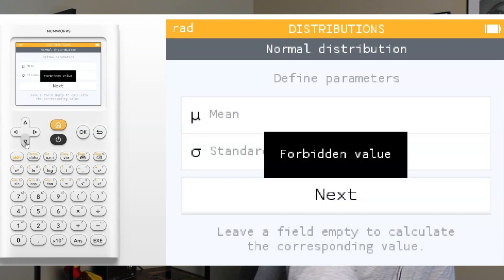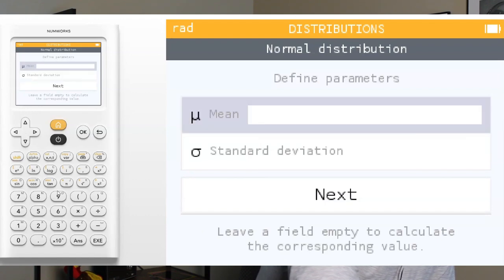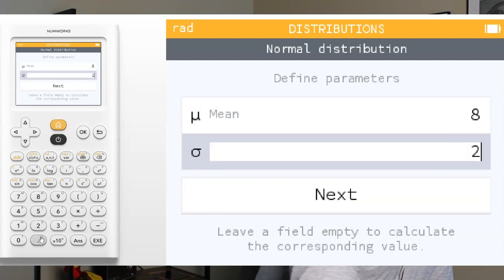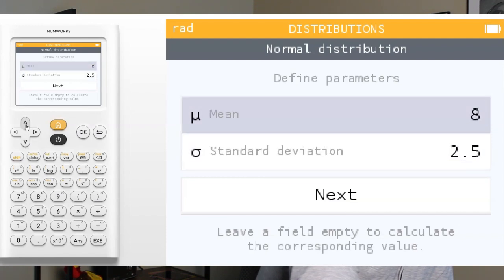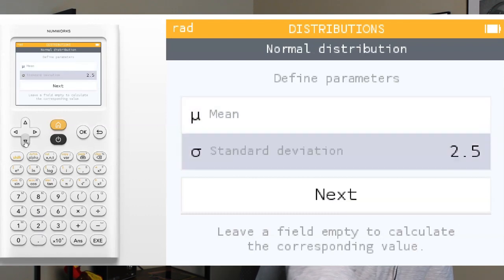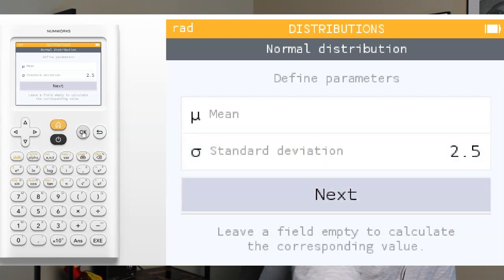We're going to clear this out. Actually, usually you have to start off with something in the mean, so I'm just going to put something there. Standard deviation, they said, is 2.5. Then I'm going to go back to the mean and hit delete, leave the mean blank, but it said we knew the standard deviation of this particular scenario was 2.5 feet. All right, we're going to go to next.